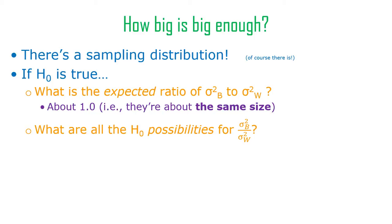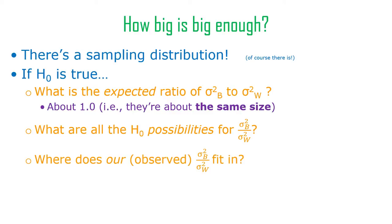What are all the null hypothesis possibilities for this ratio of between to within groups variance? That's the sampling distribution — the sampling distribution of that ratio of variances if the null hypothesis were true. We plug our observed between-to-within groups ratio into that distribution and calculate the area beyond it. So you've got the sum of squares between divided by the degrees of freedom between groups — that's the variance between groups. Any variance formula has a numerator called the sum of squares, which is the sum of squared deviations from the mean. The denominator with n minus 1 is the degrees of freedom.